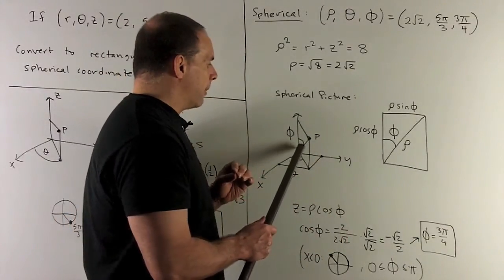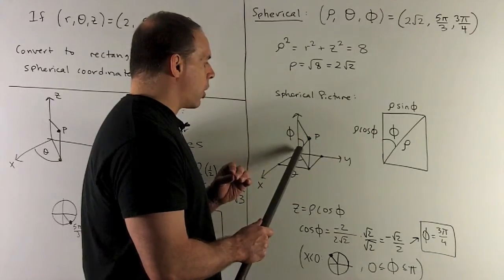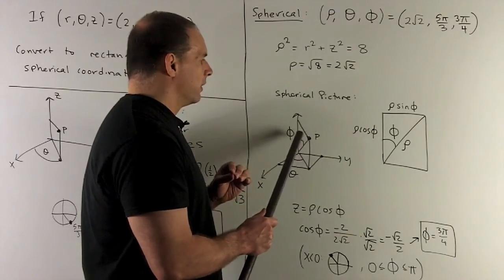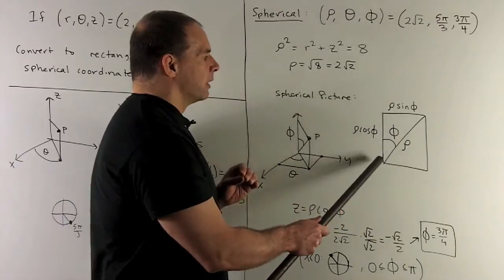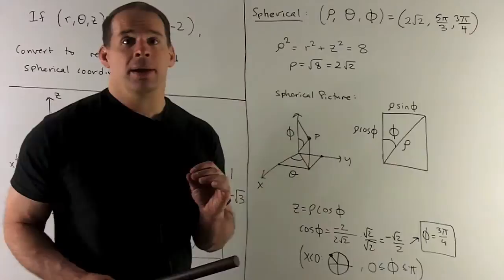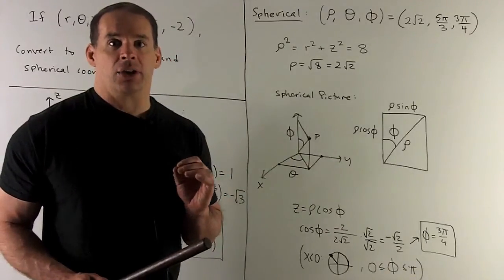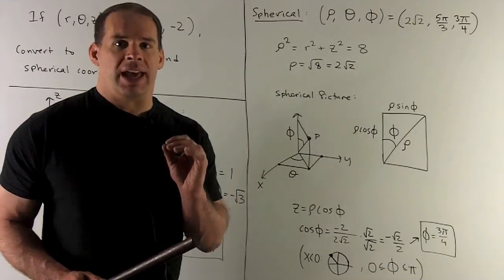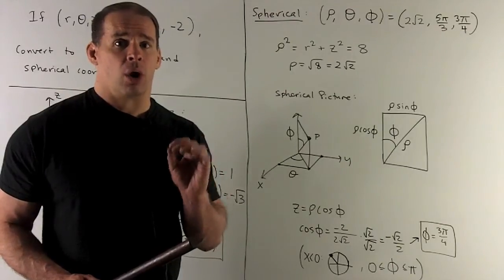So here, the hypotenuse is going to be rho. So it's going from the origin to our point. And then we note if this angle is phi, then the adjacent is going to be rho cosine phi. That's also our z in rectangular. So we're going to be able to get cosine phi in terms of z and rho.